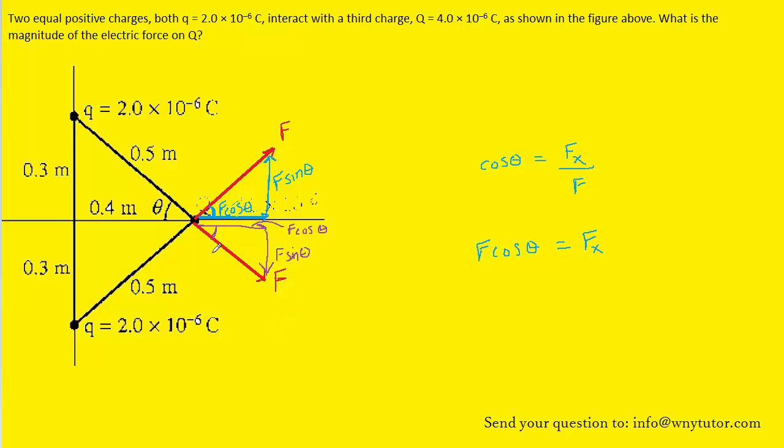Once we have the components labeled, we can actually remove the resultant force. We really only want to focus on the x and y components. So we'll erase the resultant force F and work only with the x and y components. Now if you look carefully, you will see that the y components are going to cancel out. We have a y component pointing upward and an equal magnitude y component pointing downward. Since they are equal in magnitude and oppositely directed, we can cancel them out.